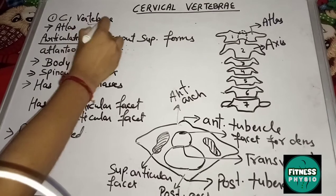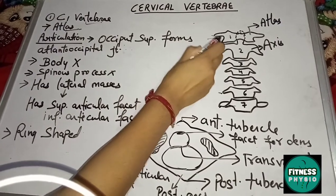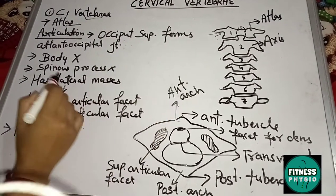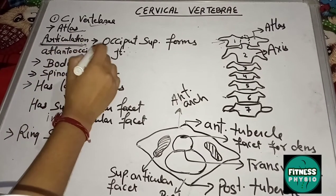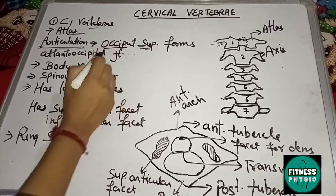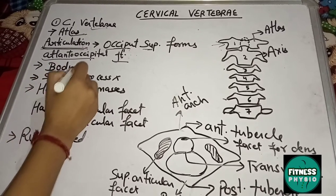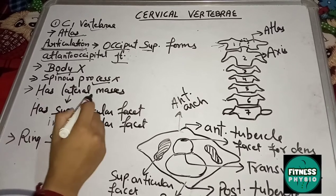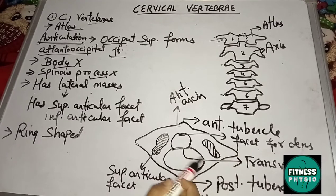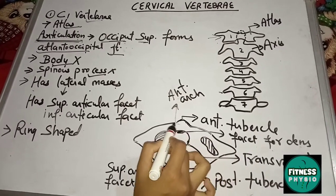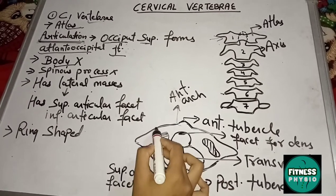Our first cervical vertebra, C1, is also known as the atlas. C1 articulates superiorly with the occiput, forming the atlanto-occipital joint. It has no body and no spinous process, and instead has lateral masses with an anterior arch and a posterior arch.